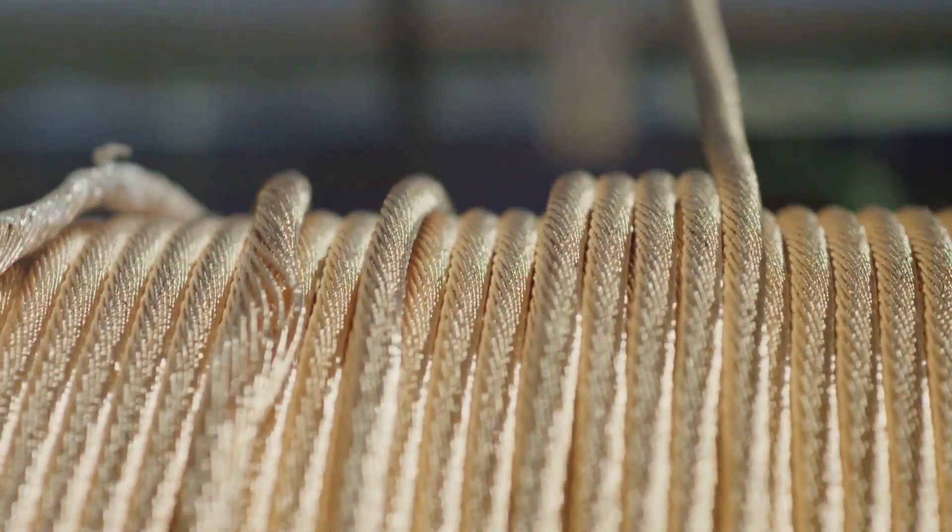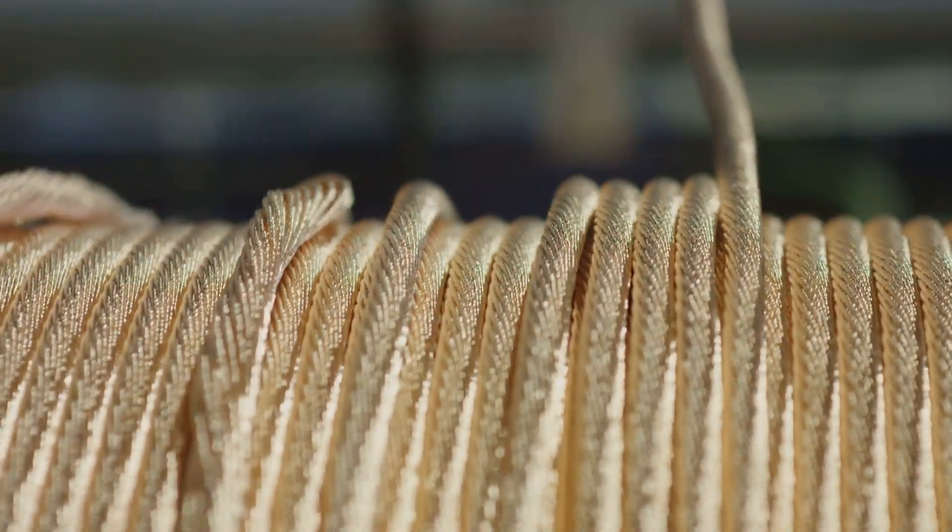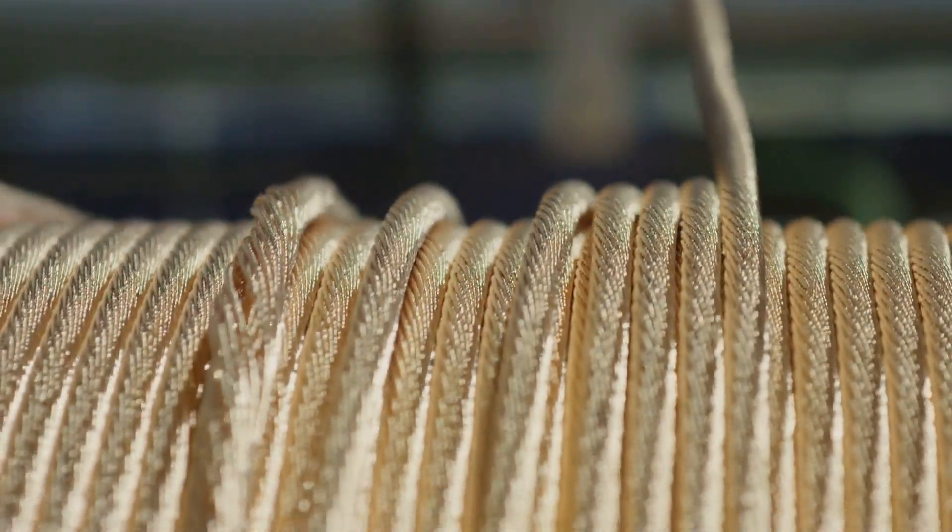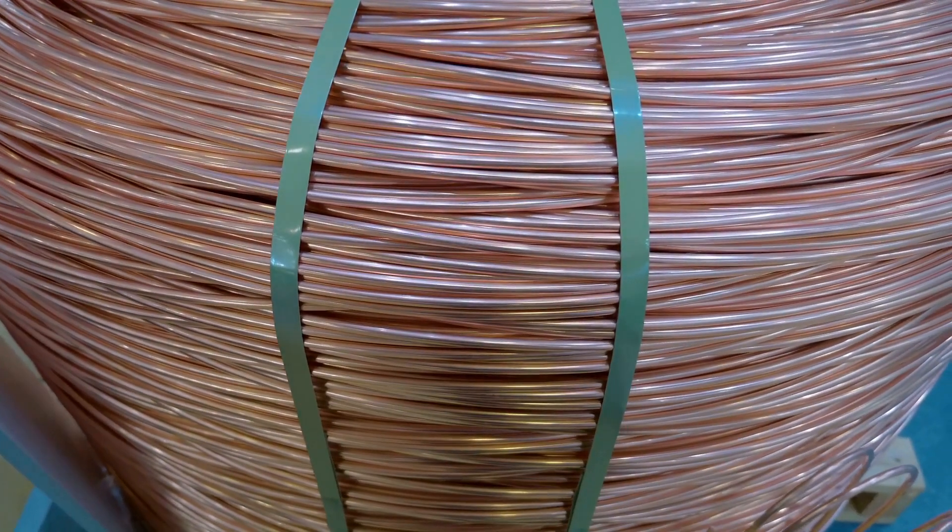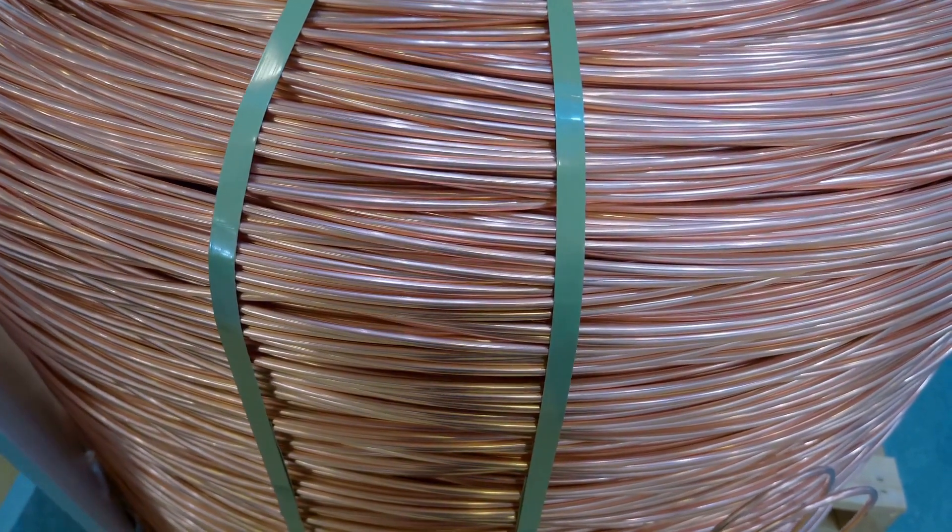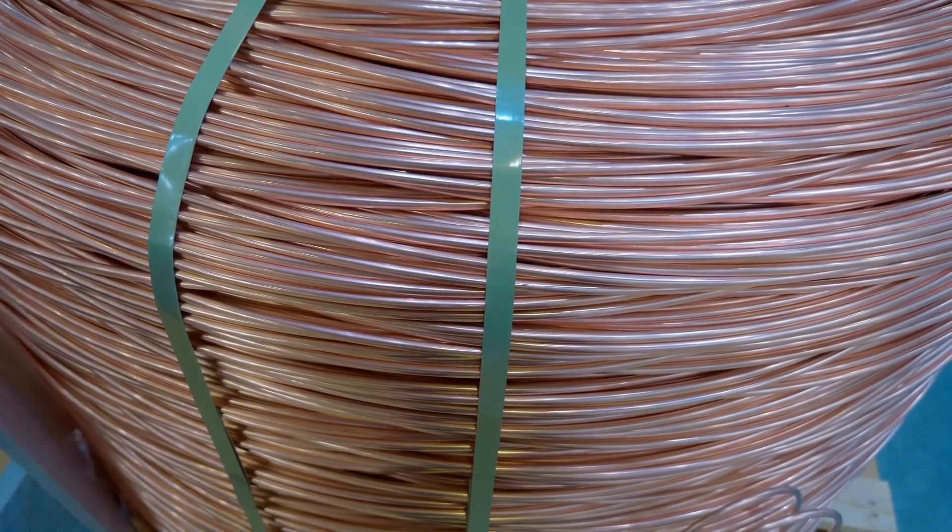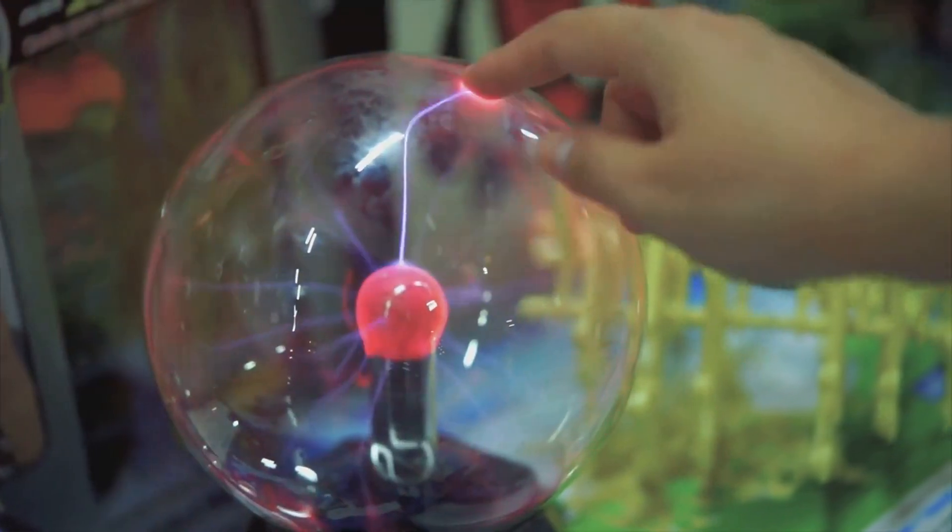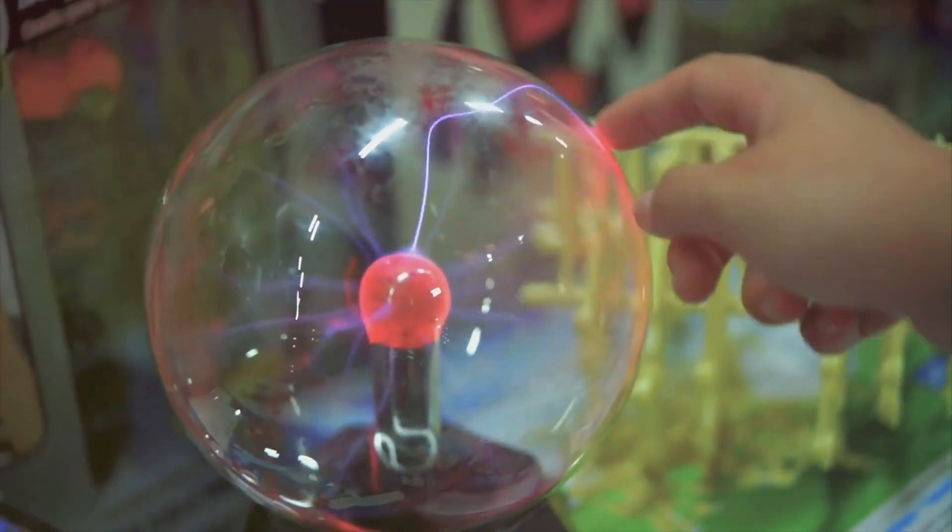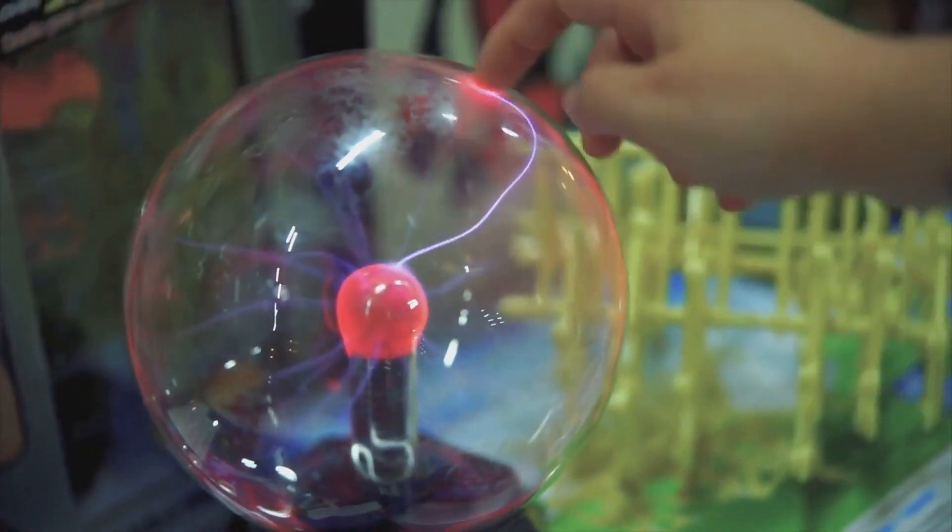A solenoid is an electromechanical device that turns electrical energy into mechanical motion. The heart of this device is the solenoid coil, a wire loop that creates a magnetic field when current flows through it. This magnetic field is really the magic behind the motion, activating a plunger or valve within the solenoid.